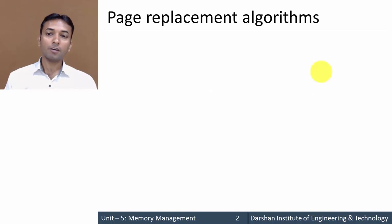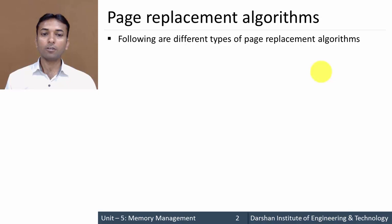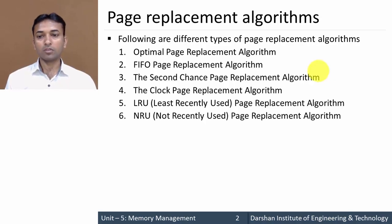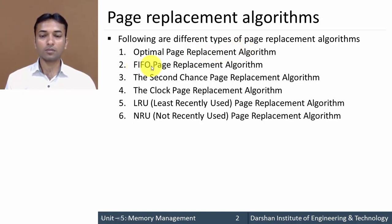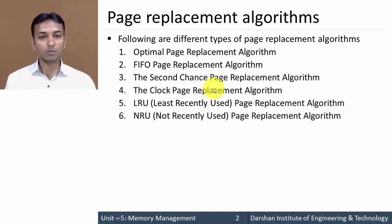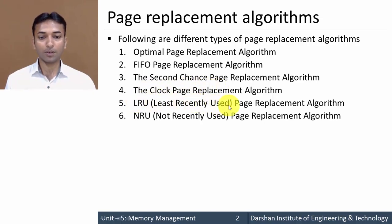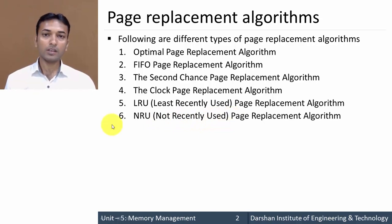Let us look at the different types of page replacement algorithms. First is the Optimal page replacement algorithm. Second is FIFO, that is First In First Out. Third is the Second Chance page replacement algorithm. Fourth is the Clock page replacement algorithm. Fifth is LRU, that is Least Recently Used. And last is NRU, that is Not Recently Used. We will see each algorithm in detail one by one.